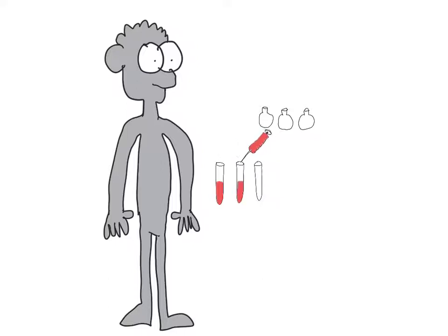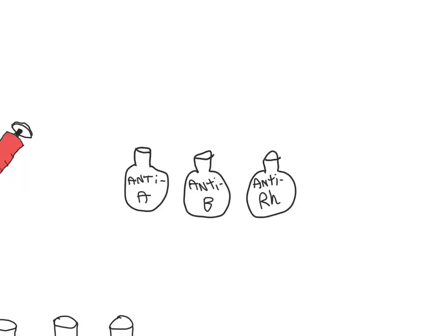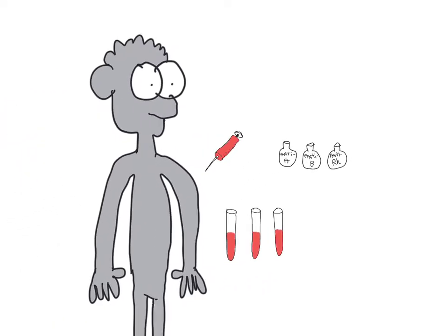The last thing we're going to need are antibodies. We're going to use some of the same antibodies that can be found in human blood: Anti-A, anti-B, and anti-RH antibodies. We will be adding one of each of these to our three samples of the patient's blood.